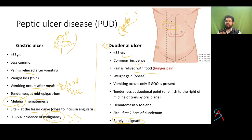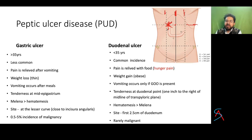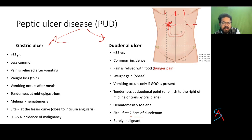Ulcers along the lesser curvature are typically benign; if a gastric ulcer is toward the greater curvature it is more likely malignant. Duodenal ulcers rarely turn malignant. Because duodenal ulcer pain is due to higher gastric acid, when the person eats the acid gets neutralized and they feel better, so duodenal ulcer patients keep munching and may gain weight, appearing a little obese.